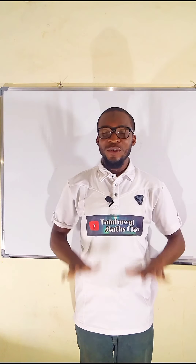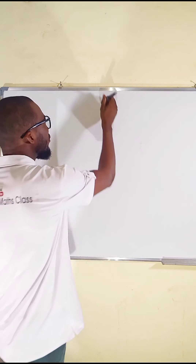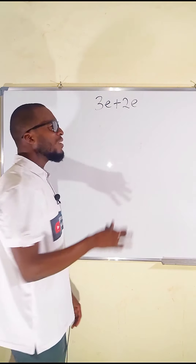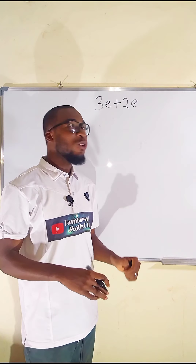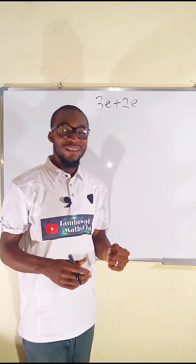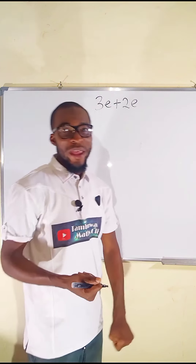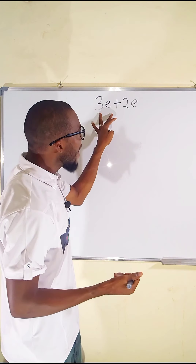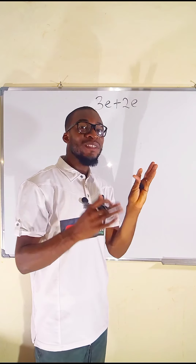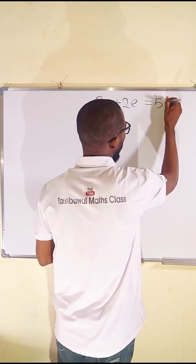Let's start with addition — adding like terms. Suppose we want to add 3x and 2x together. Some students might wonder what x means, so you can relate unknown variables to something real or natural. Let's assume x stands for egg. So 3x and 2x together have the same kind, making 5x.